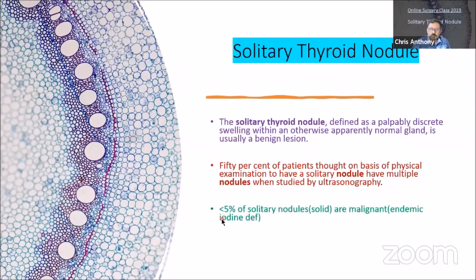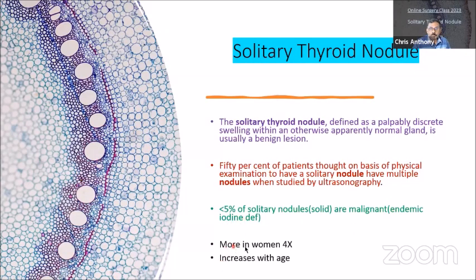The important thing is that a small percentage — usually less than 5%, some books say even 1% — of these solitary nodules are malignant. Women are four times more commonly affected, and the incidence increases with age. It is common in young adults and in elderly patients — above 50 and less than 20 years of age.